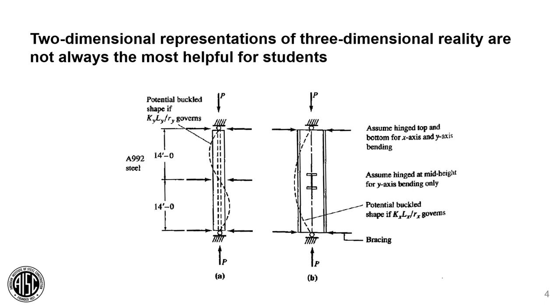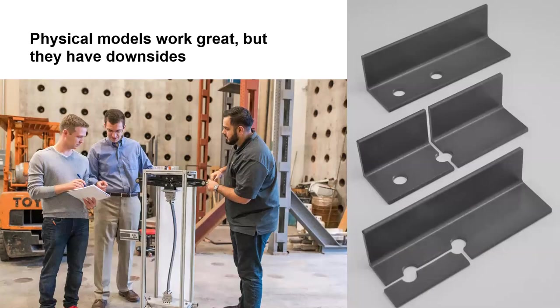Two dimensional representations are no doubt useful, but they are often not a good substitute for the three dimensional reality for folks that are just starting out. This is not just true for connections — buckling is another area where students have a difficult time visualizing what is happening. Physical models work great to bridge these gaps, but you can't always lug them around, which means they aren't always available when you need them, or when it would be most beneficial for the students to have them.